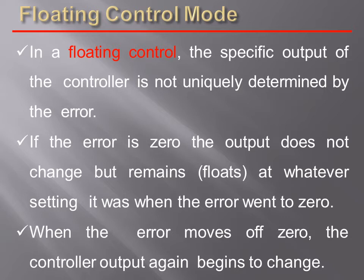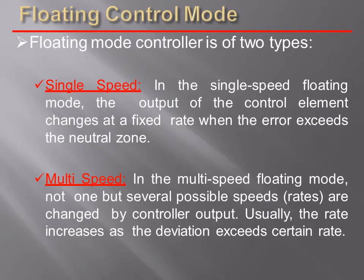There is another type of control mode called floating control mode. In floating control, the specific output of the controller is not uniquely determined by the error. If the error is 0, the output does not change but remains or floats at whatever setting it was when the error went to 0. When the error moves off 0, the controller output again begins to change. The floating mode controller is of two types: single speed and multi-speed.